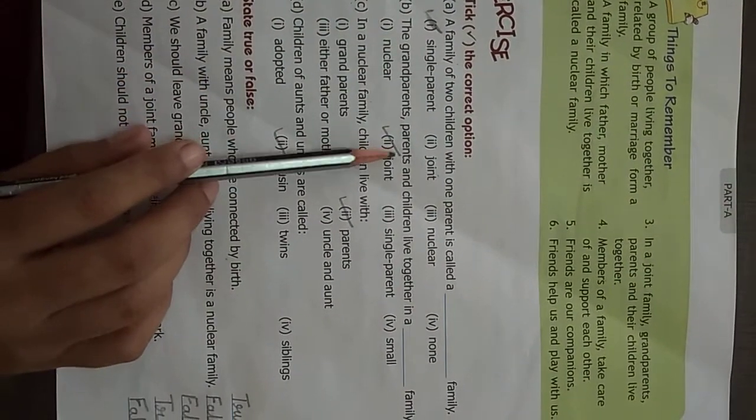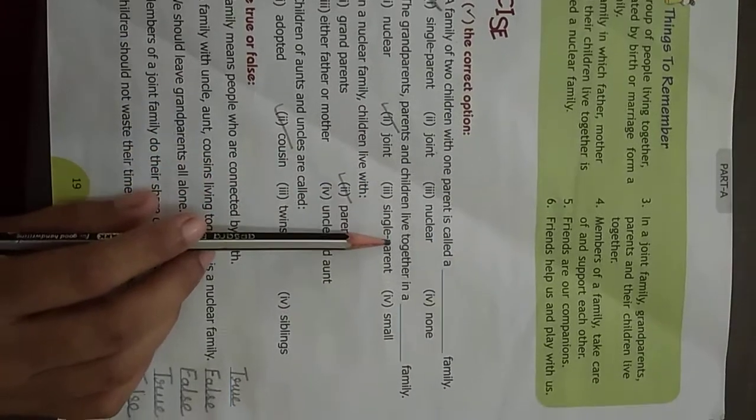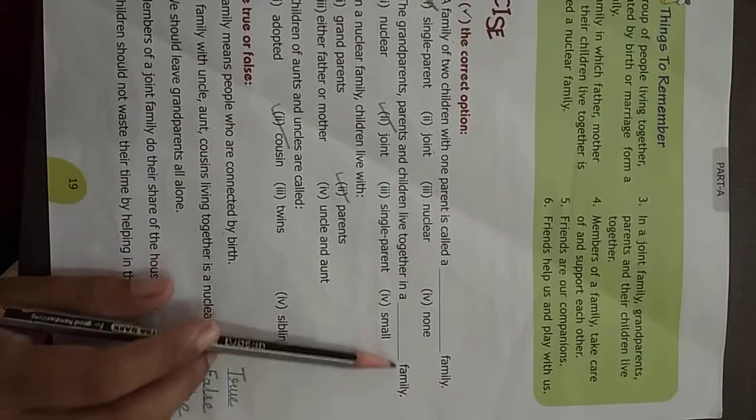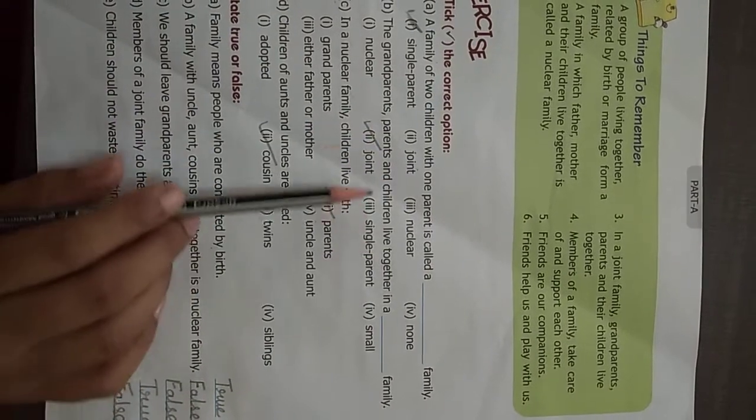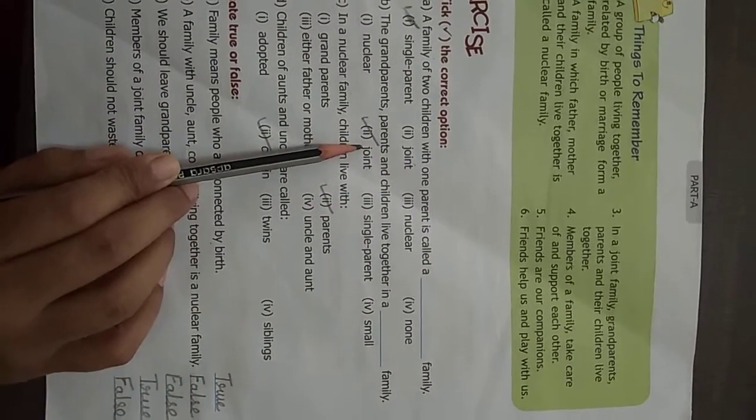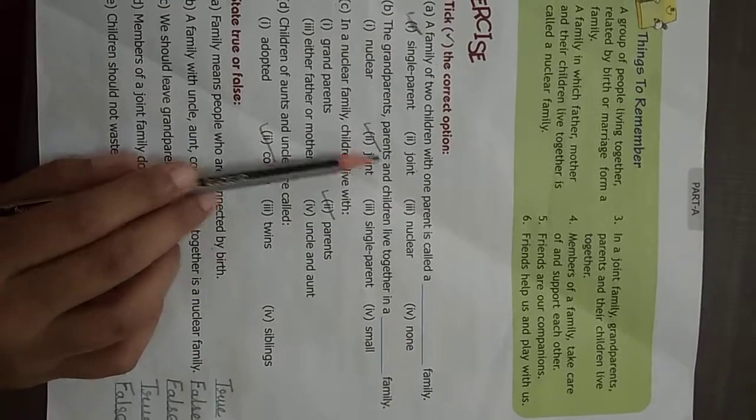The next one, the grandparents, parents and children live in a dash family. Means joint family. They all are live in joint family. So, you have to tick on joint.